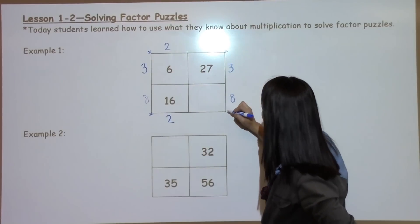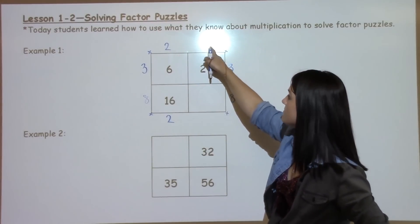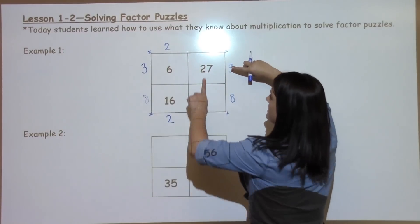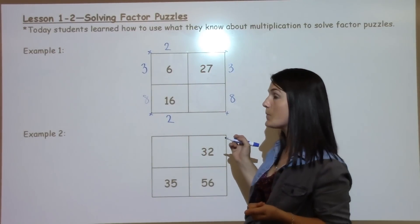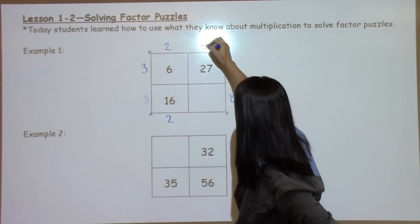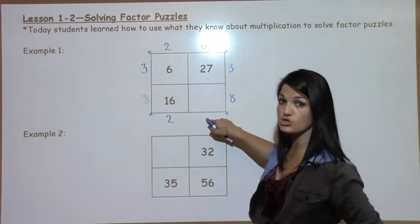I know that all of my corners have little multiplication signs. 3 times something is going to give me that 27. So just like in our multiplication table, think 3 times what gives me 27? I know that it's a 9. That 9 is going to come straight down.